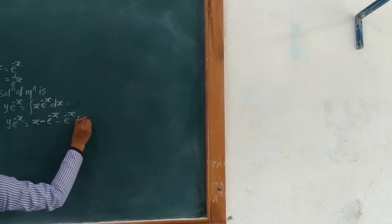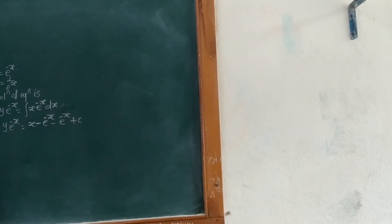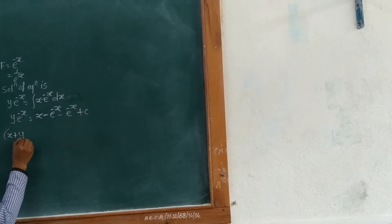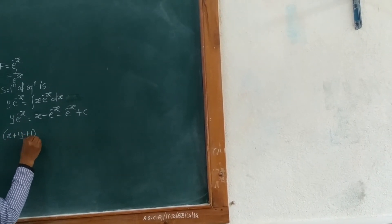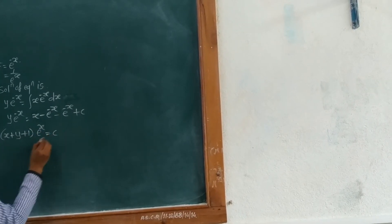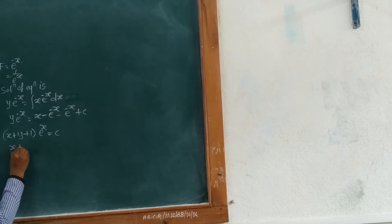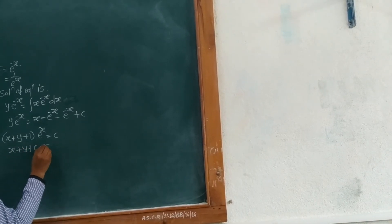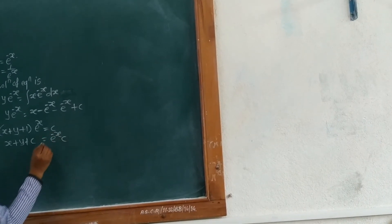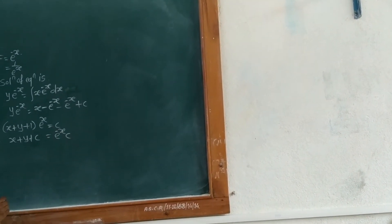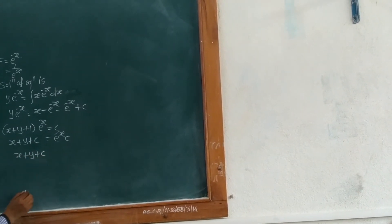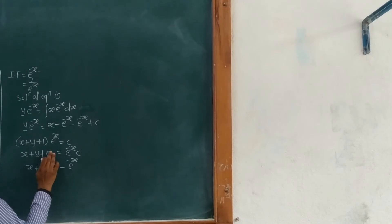Taking e raised to minus x as a common factor, we get (x plus y plus 1) times e raised to minus x equals c, so x plus y plus 1 equals c times e raised to x. We can write this as x plus y plus 1 minus c times e raised to x equals 0. This is the solution of equation 1, which we number as equation 3.